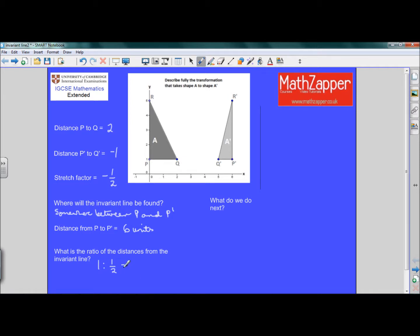That's a little bit clumsy, and we can easily make this better to work with by multiplying through by a scale factor of 2. So that gives us the same ratio, 2 to 1. 2 times 1 is 2, 2 times a half is 1. So now we can say the ratio of the distance from the invariant line is 2 to 1.